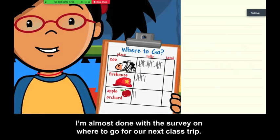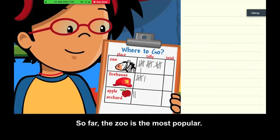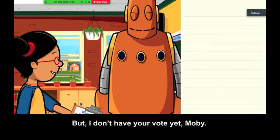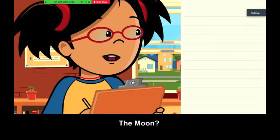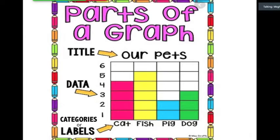I'm almost done with the survey on where to go for our next class trip. So far, the zoo is the most popular. It has sixteen votes. But I don't have your vote yet, Moby. Where do you want to go? The moon? I don't think the bus will get us there.